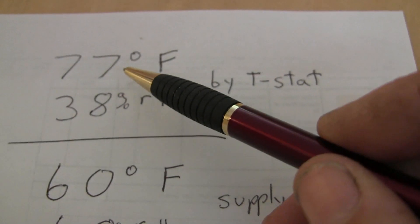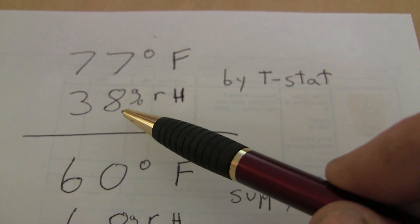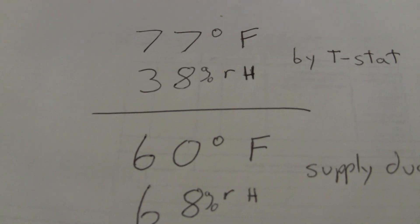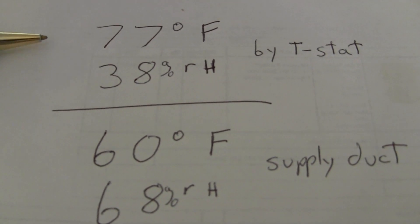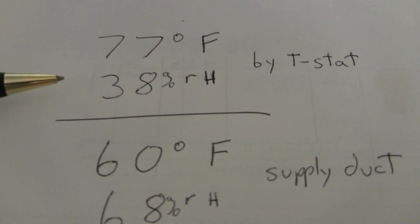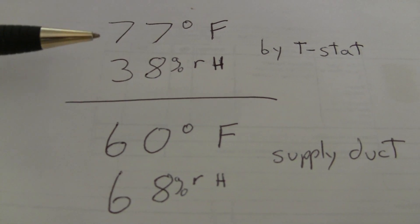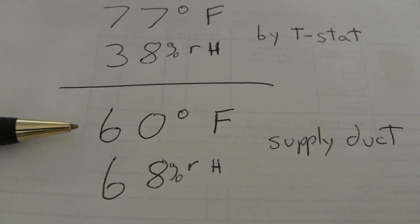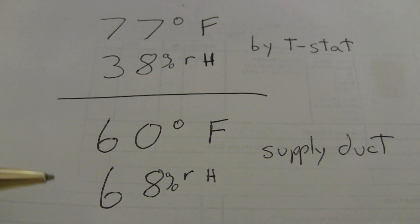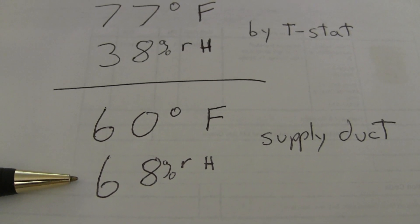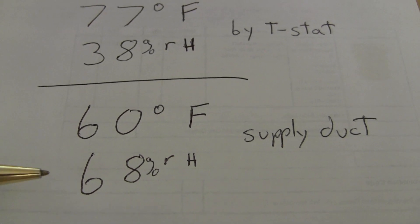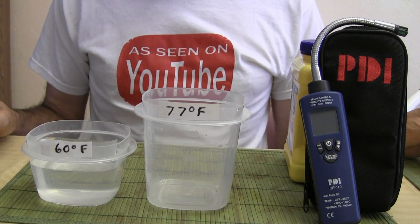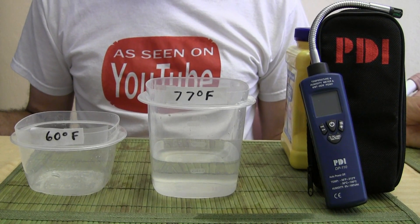Up here by my thermostat I was getting 77°F with 38 percent relative humidity. What a lot of people don't realize is that as the temperature goes up, the relative humidity goes down. So that's 77°F inside the house by the thermostat, and 60°F inside the supply duct. Some people would think the relative humidity would be lower inside the supply duct because the temperature is lower, but that's not the way it works.